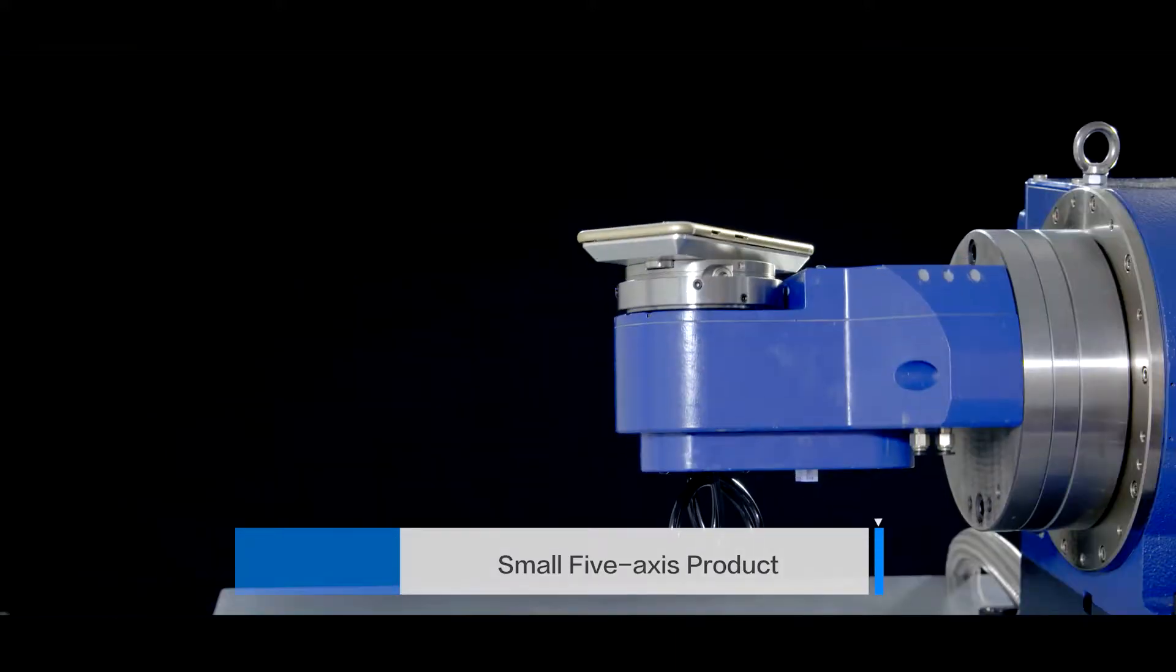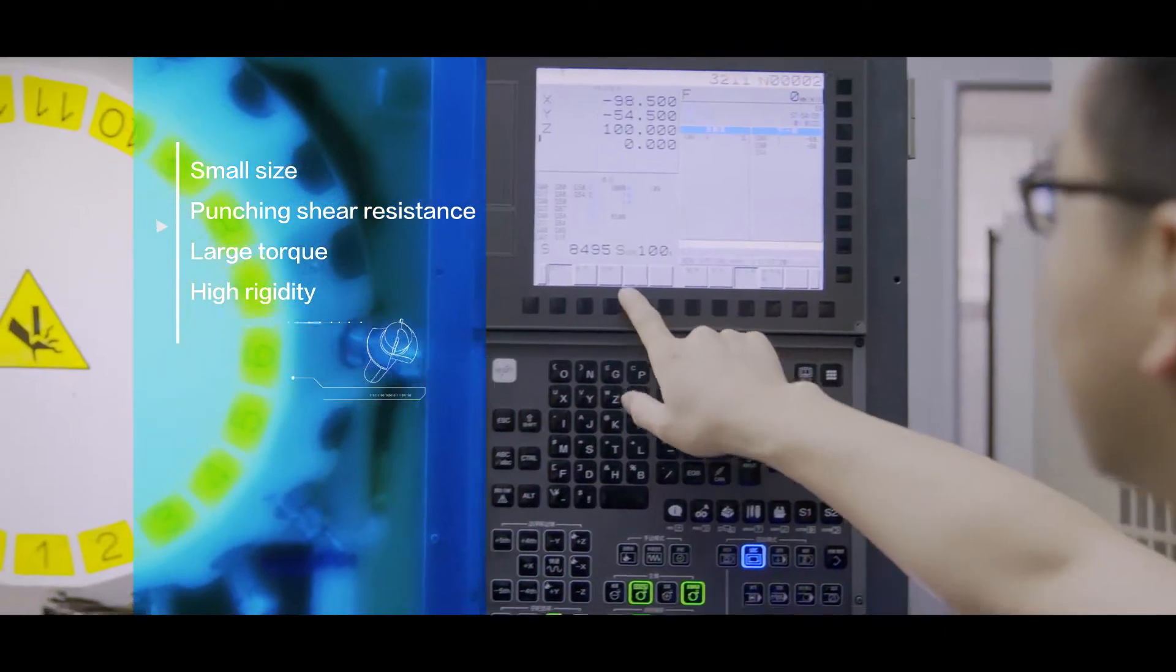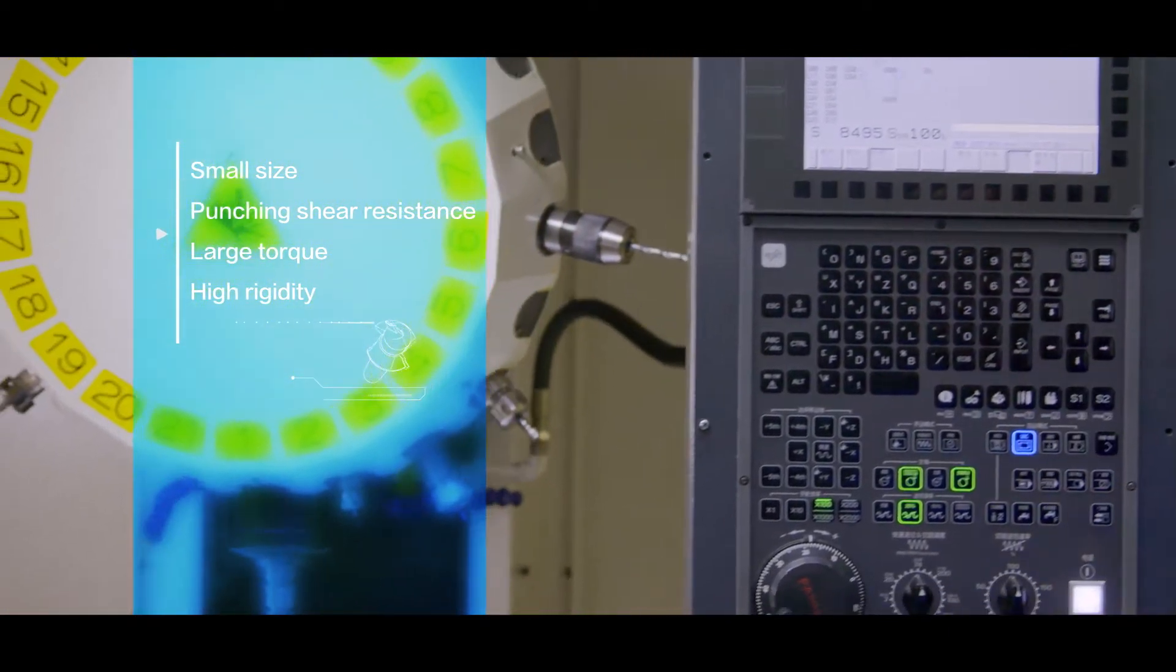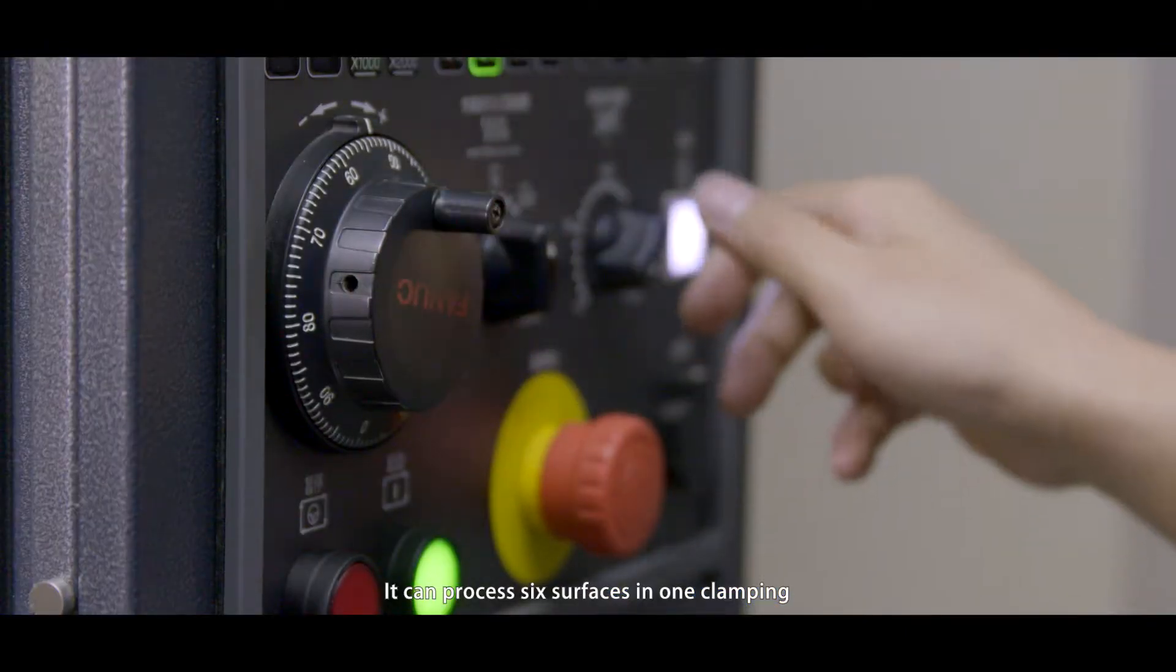Small 5-axis product: It features small size, punching shear resistance, large torque, and high rigidity. It can process six surfaces in one clamping.